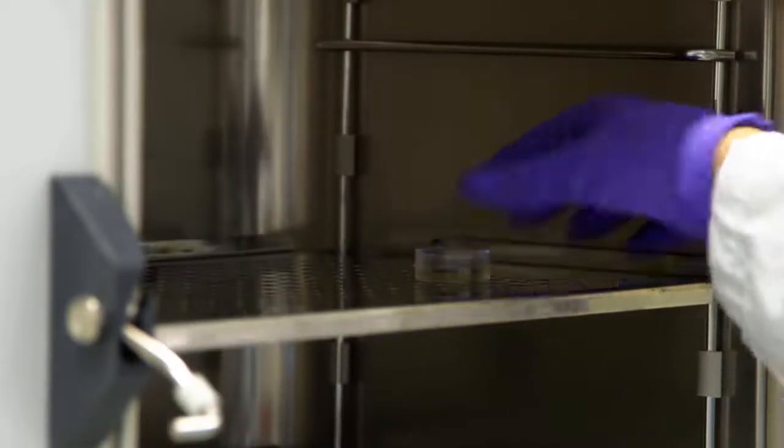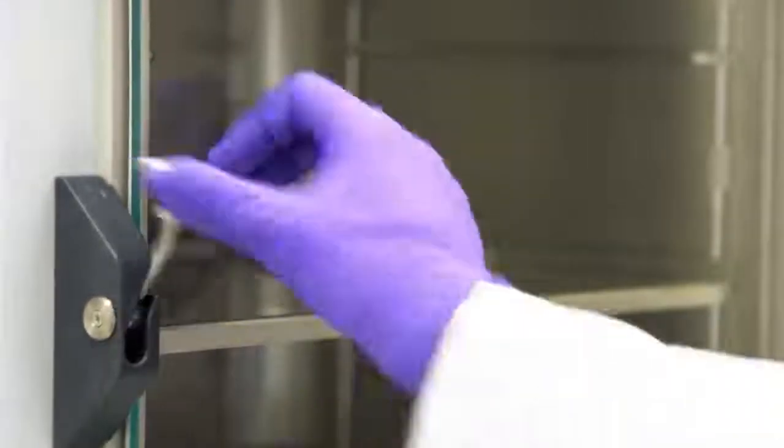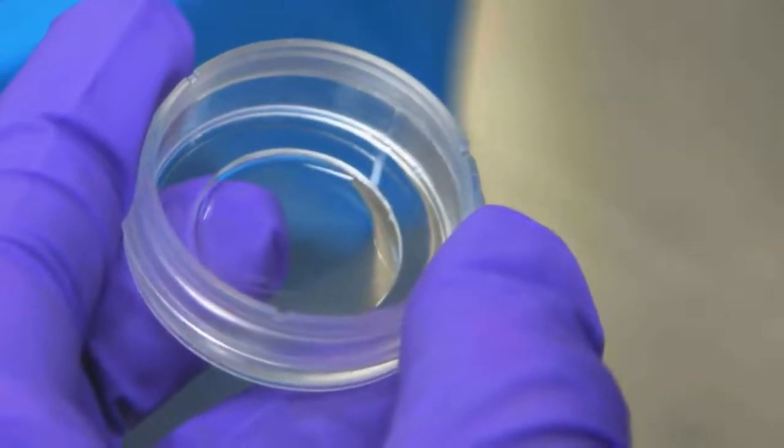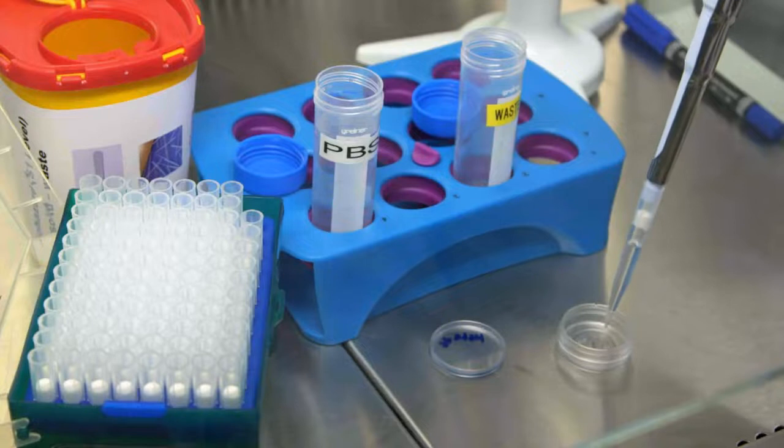After 30 minutes at 37 degrees Celsius and 5% carbon dioxide, carefully aspirate the dye-containing supernatant from each 35mm Petri dish and wash the cells with 2 milliliters of PBS.